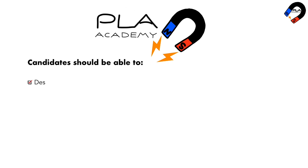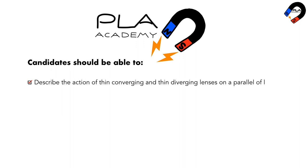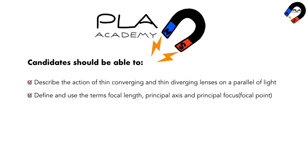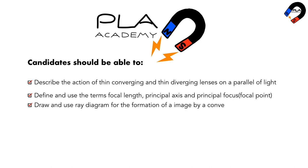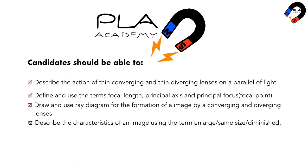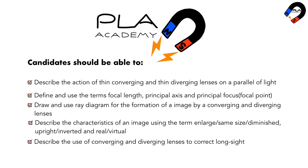Candidates should be able to describe the action of thin converging and thin diverging lenses on a parallel beam of light. Define and use the terms focal length, principal axis, and principal focus. Draw and use ray diagrams for the formation of an image by converging and diverging lenses. Describe the characteristics of an image using the terms enlarged, same size, diminished, upright, inverted, real, and virtual. Describe the use of converging and diverging lenses to correct long-sightedness and short-sightedness.